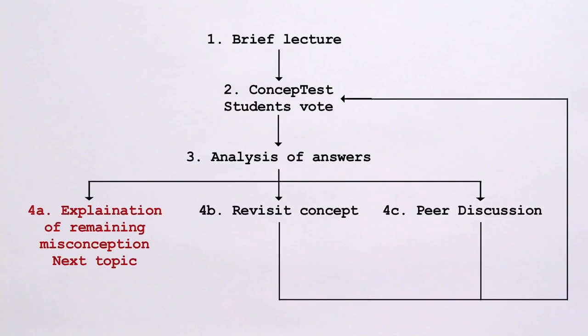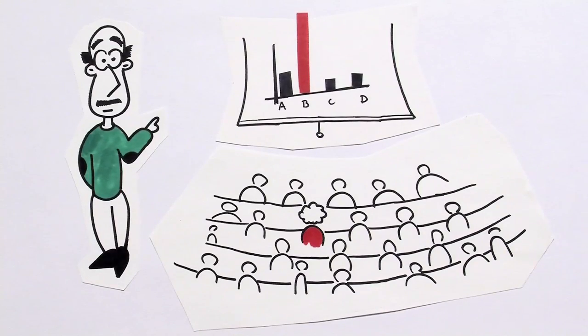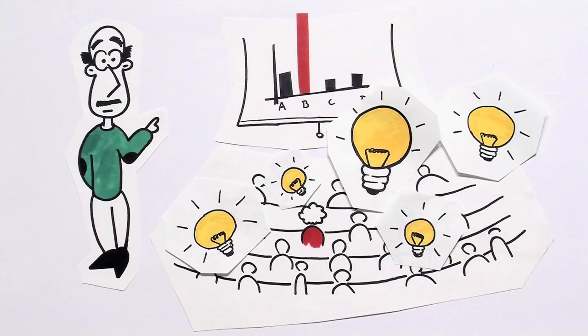Now there are three possible scenarios. In the easiest scenario, the majority of students give the correct answer. This indicates a high level of comprehension amongst themselves. Any remaining grey areas can be briefly elucidated before Professor Brown continues with his lecture.